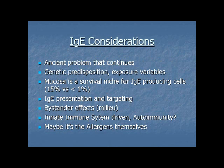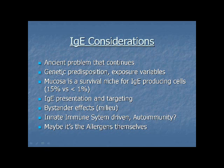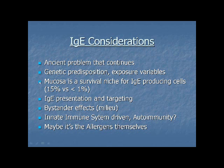We know allergies have been around for a long time — it's an ancient problem. We know the story about Menes, the pharaoh who got stung by a wasp. That changed history because he would have obtained tin and his swords would have been much stronger — he would have had brass. Today we think genetic predisposition is important in allergy, and we know that exposure variables are very important. I think genetic predisposition is overplayed, because once we look at the structure and function of allergens, there's no reason why everyone ought to be sensitized — which pushes us back to exposure.